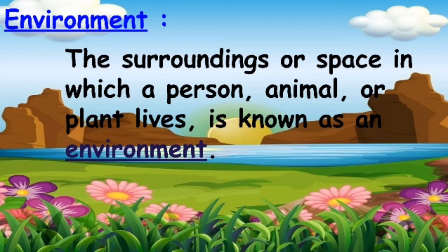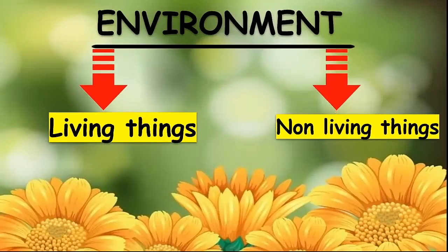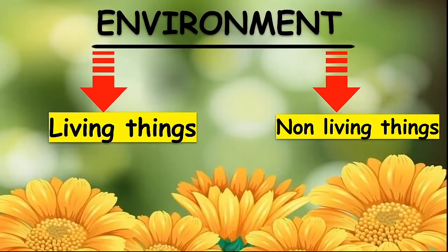Environment. What is environment? The surroundings or space in which a person, animal or plant lives is known as an environment. Environment is everything that surrounds us.